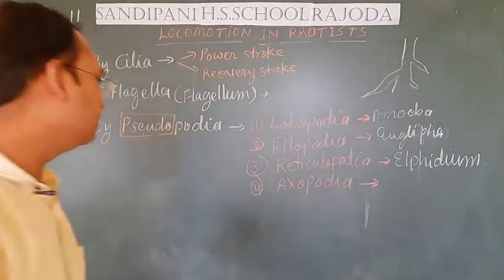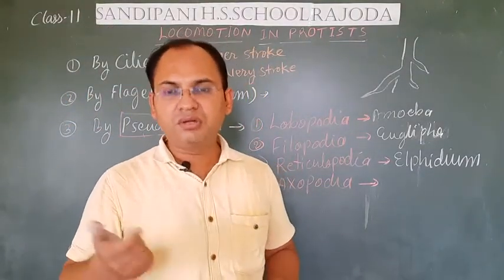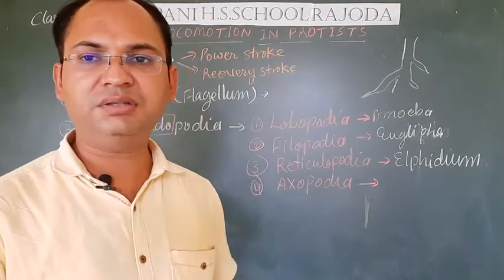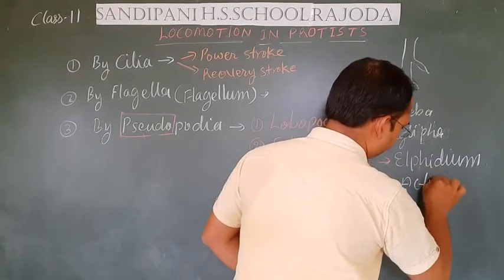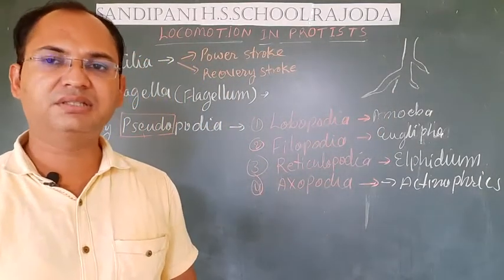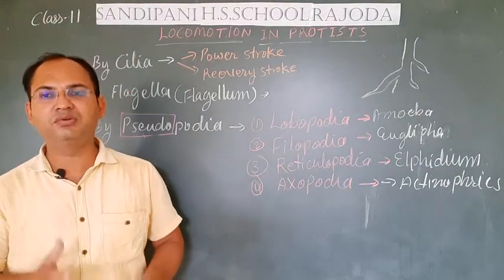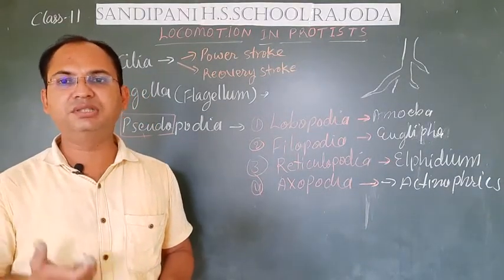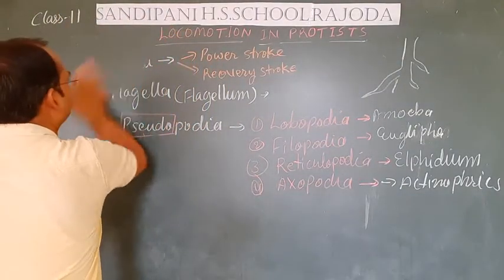The last type is axopodia. Axopodia are very hard, filamentous, and conical in shape. They provide resistive locomotion in the Protista and are mainly found in Actinophrys. So students, these are the major locomotory organs found in Protista. Now, if locomotory organs are present which result in the locomotion of the organism, what is actually the need for locomotion?